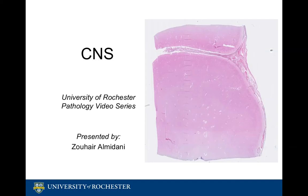The CNS consists of neurons and glial cells, including astrocytes, oligodendroglia, and microglia. These can be seen in the background of neuropil, which is the matrix of gray matter. This neuropil is eosinophilic and granular in appearance, and is composed of the cellular processes of neurons and glial cells.